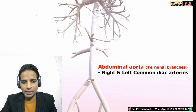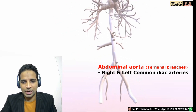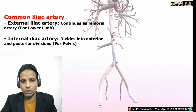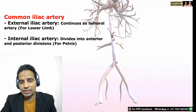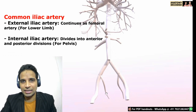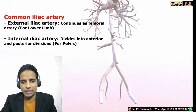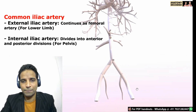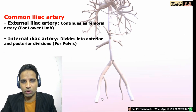The terminal branches include the right and left common iliac arteries. Tracing the common iliac artery further, the external iliac artery continues into the lower limb as the femoral artery — its name changes when it crosses the inguinal ligament. The internal iliac artery further subdivides into anterior and posterior divisions, and is the chief arterial supply for the pelvis, supplying the pelvic wall and pelvic organs.